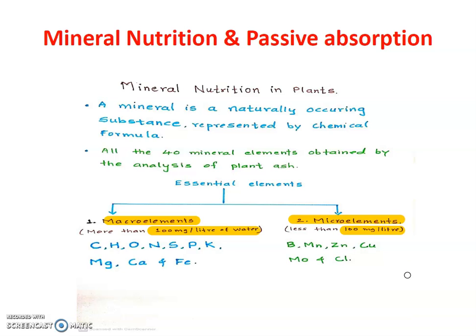Macro elements means those minerals which require more than 100 mg per litre of water. Micro elements require less than 100 mg per litre of water. Macro elements include calcium, hydrogen, oxygen, nitrogen, sulfur, phosphate, potassium, magnesium, and ferrous (iron). Micro elements include boron, molybdenum, zinc, copper, and chlorine. These are called micro because they are required in lesser quantity.